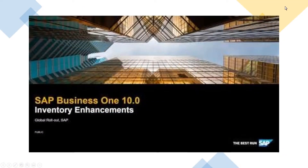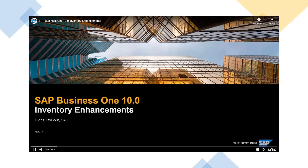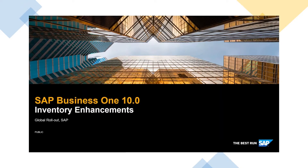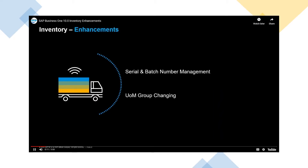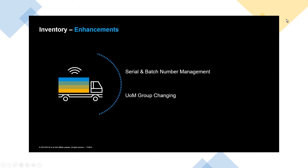Now we can see a little demo about those new changes in inventory and distribution. SAP Business One 10.0 inventory enhancements. We would like to introduce a couple of enhancements in inventory management: the enhancements in serial and batch number management and the unit of measurement group changing.